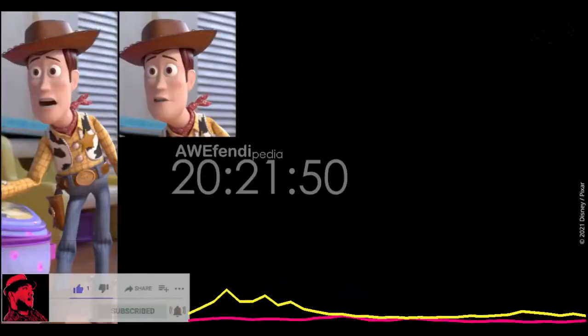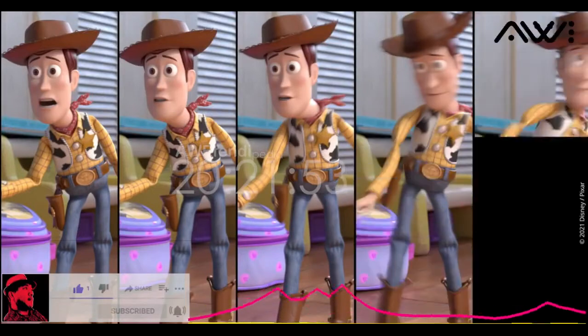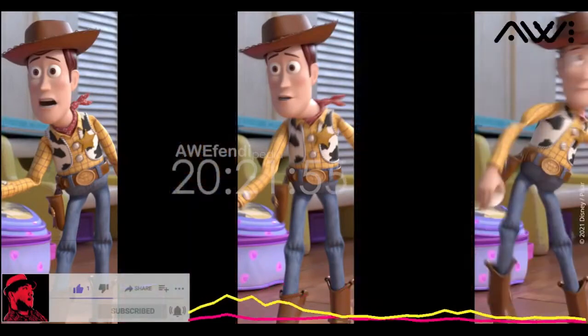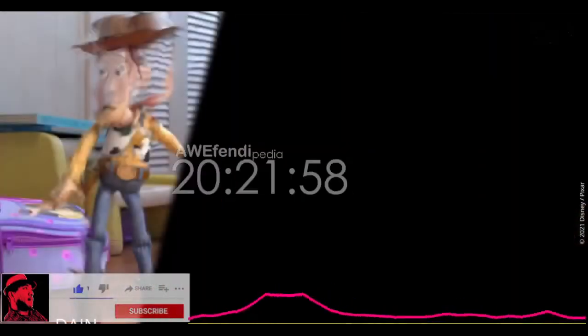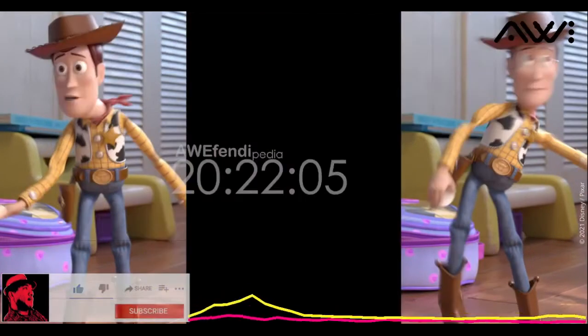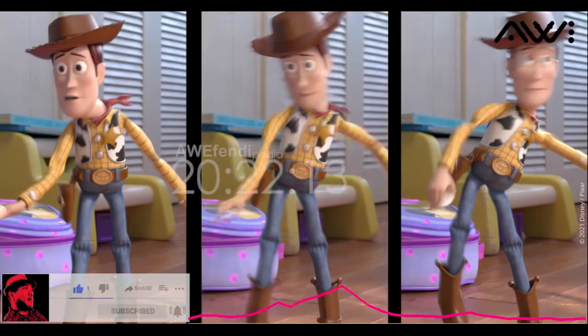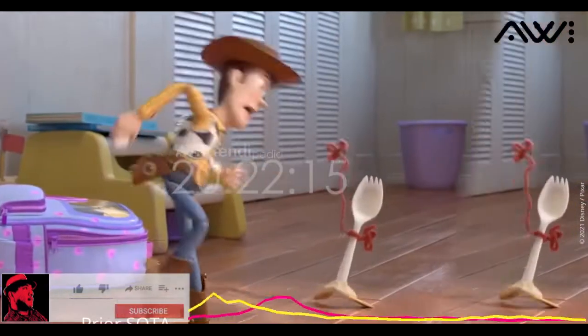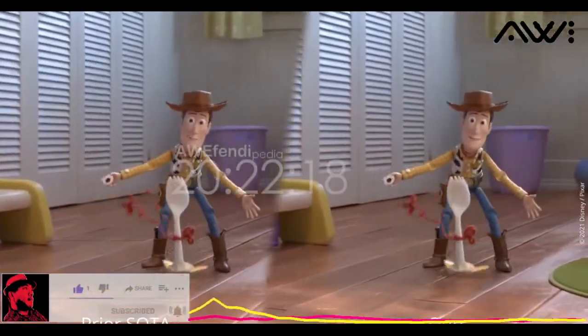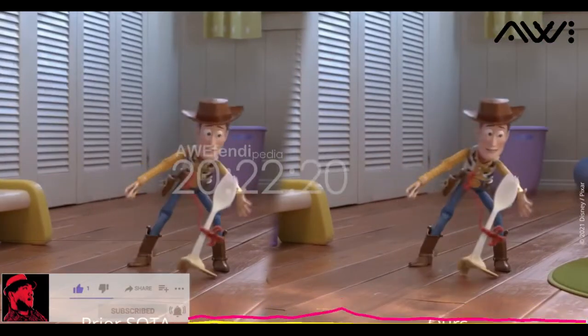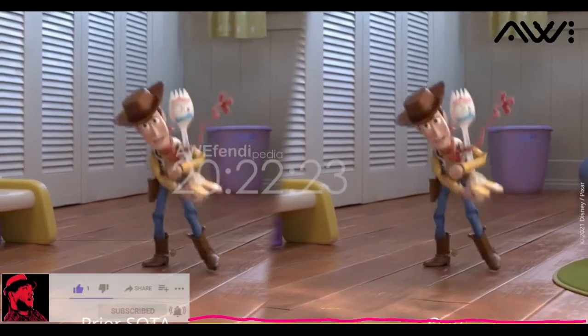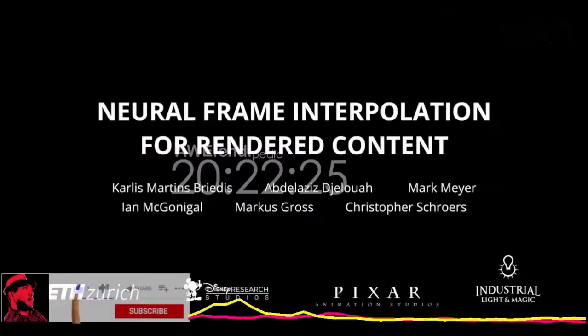As Monte Carlo renderings can take up to hundreds of CPU core hours to render, wouldn't it be great to skip some of the frames and interpolate them instead? Unfortunately, the existing methods are not yet good enough with many visible artifacts. We present a method that uses auxiliary feature buffers of the missing frames, that are very cheap to compute, to guide interpolation. Our method significantly improves over the current state of the art and produces production-level quality output. Come to our talk to learn more.